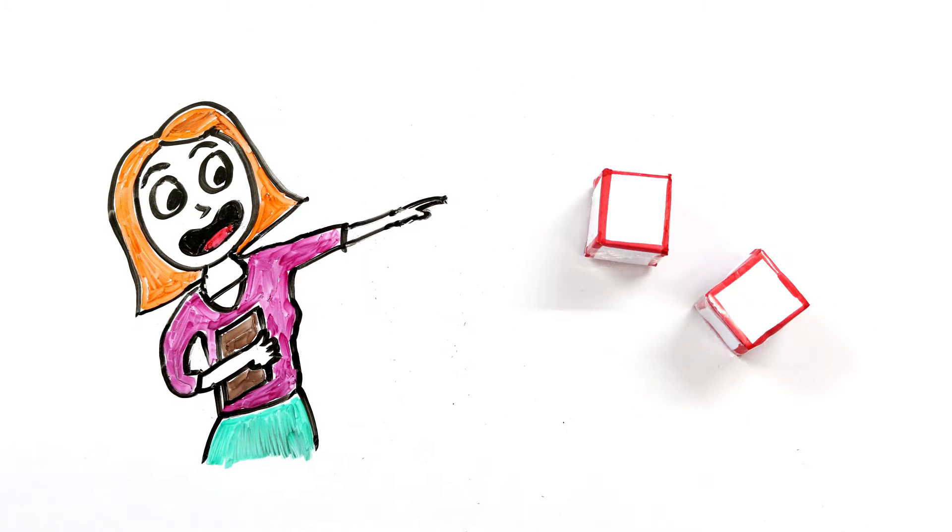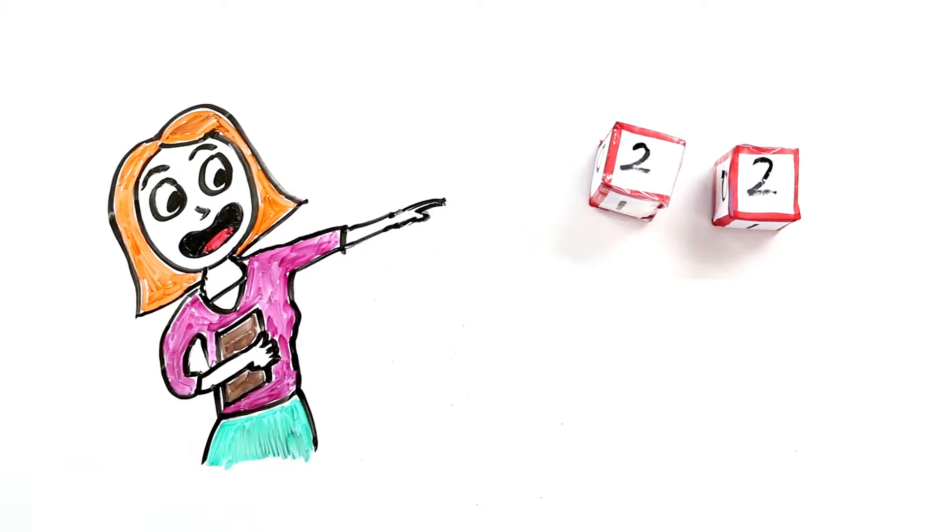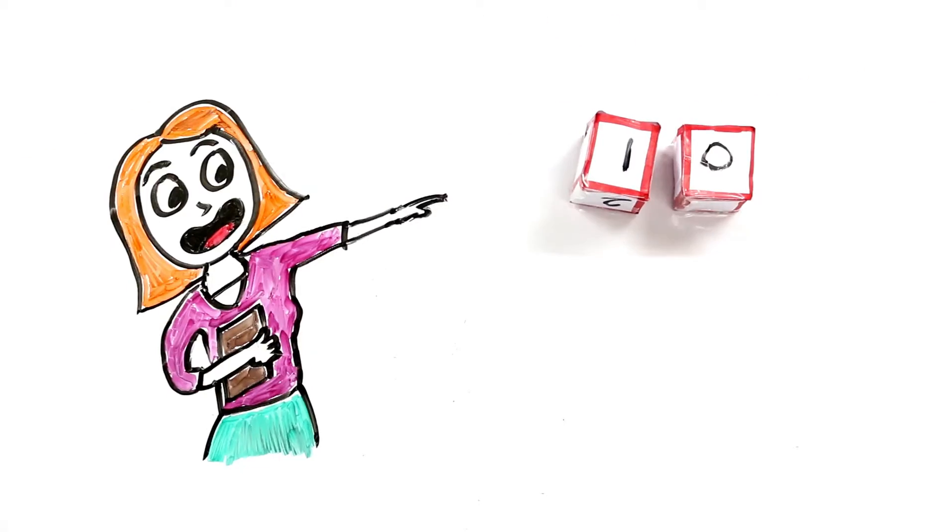First, we have to understand that irrespective of whatever combination we choose, we have to write 0, 1 and 2 on both the dice to show dates like 01, 10, 11 and 22.